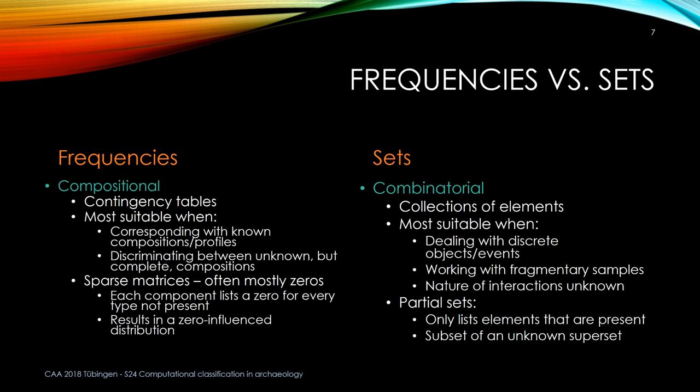And that's something that's actually far more rare. If you're doing large-scale regional comparisons site to site and you know what the total assemblage available for each site is, then you can do compositional analysis. But that's a completely different set of mathematics and statistics. Because one of the problems when you run into frequency data is you're dealing with sparse matrices — a lot of zeros.